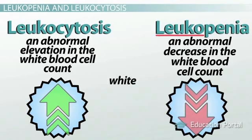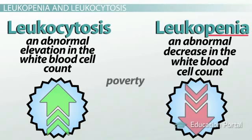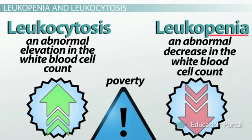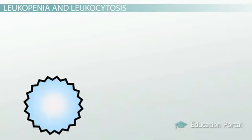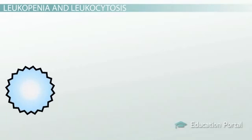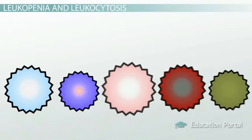Leuko stands for white in white blood cells, while penia is the Greek word for poverty or deficiency of something. It'll be important to remember that little tidbit for later.